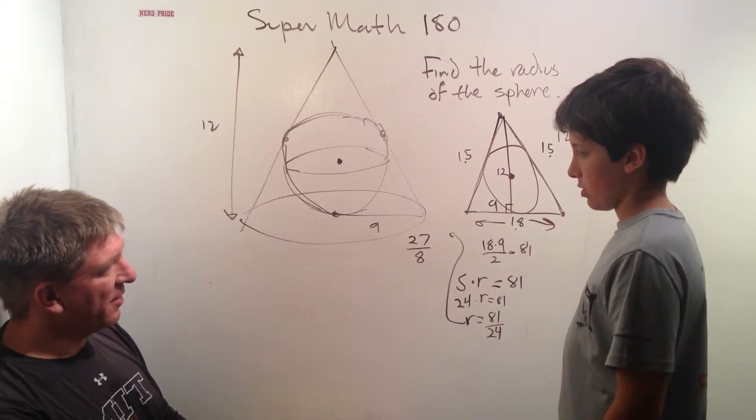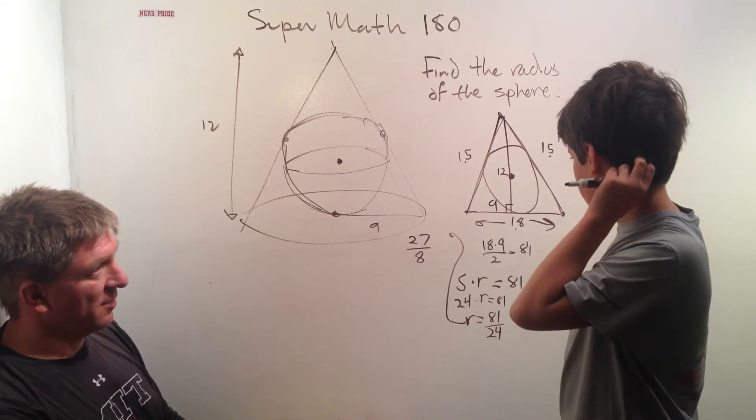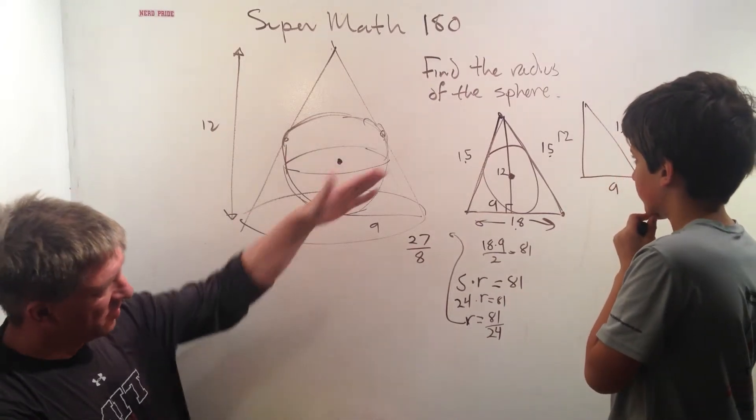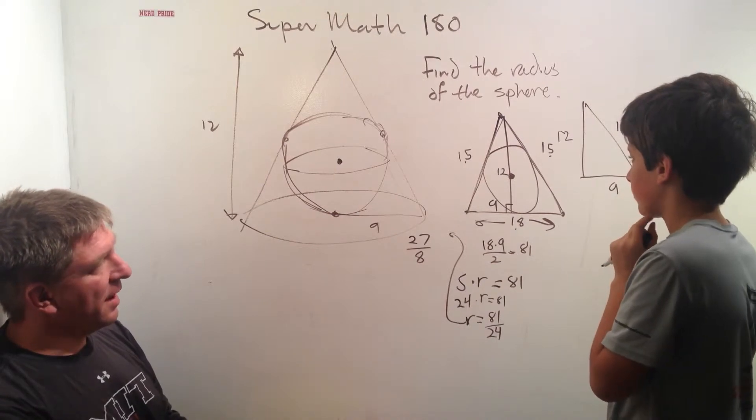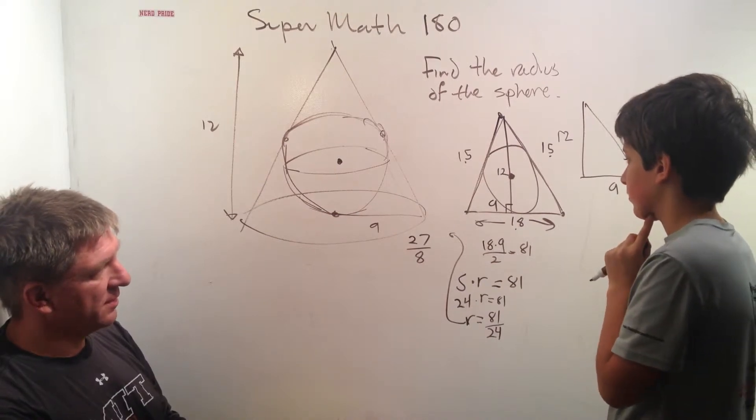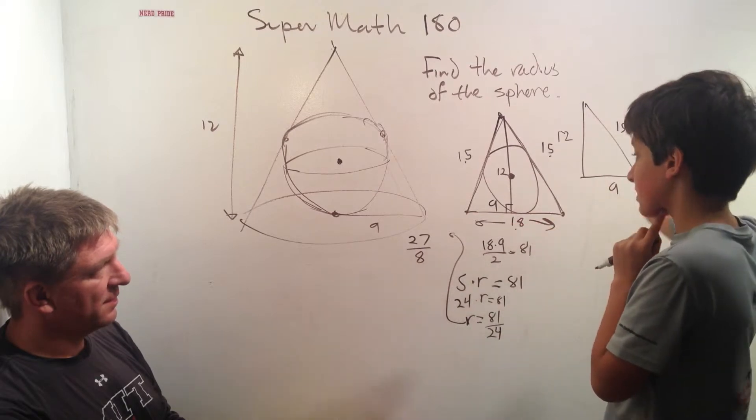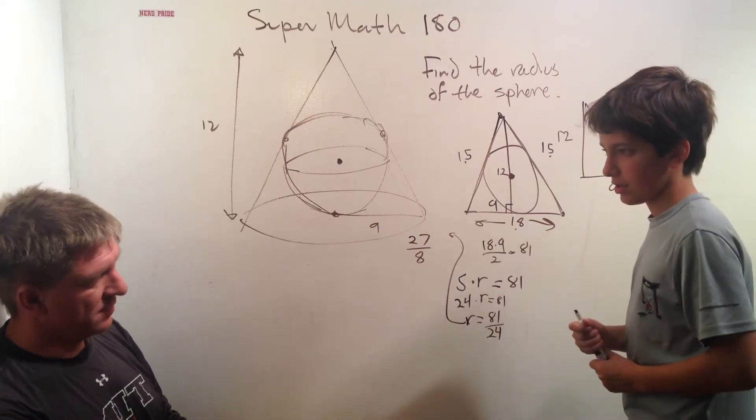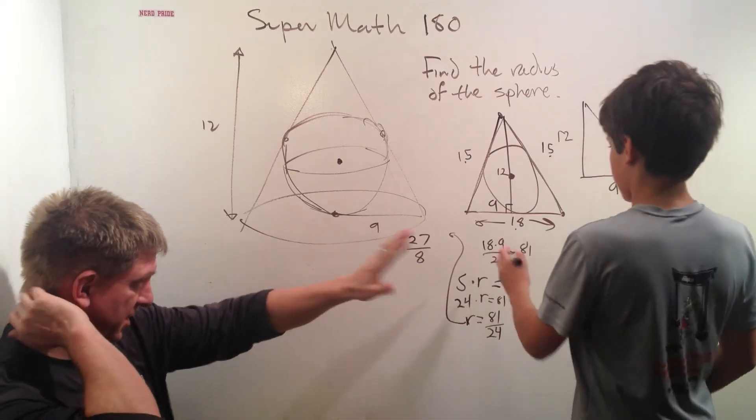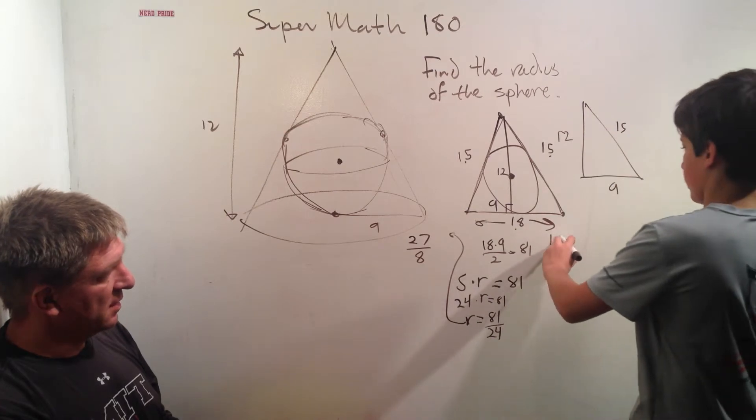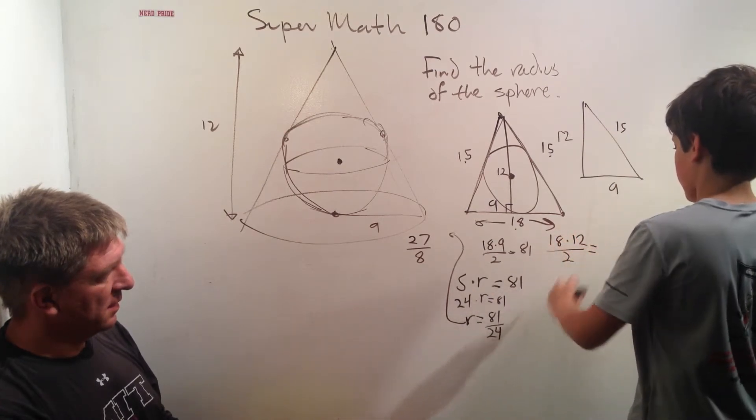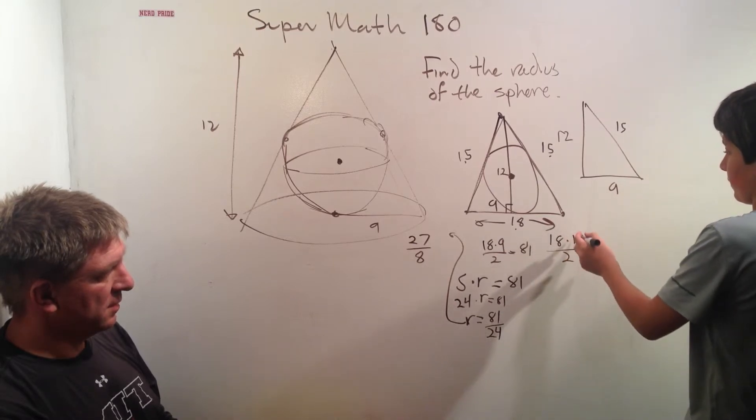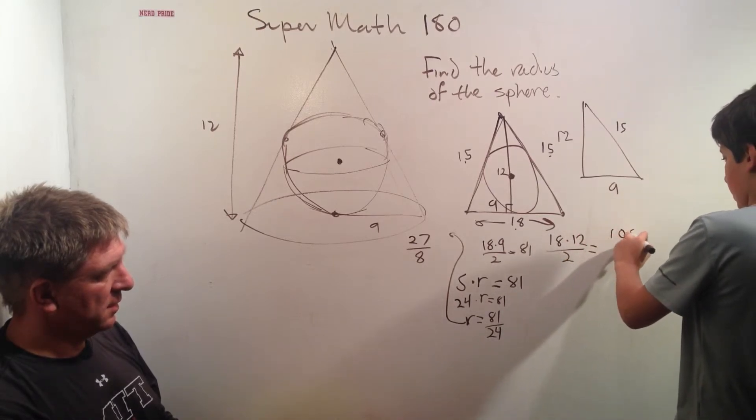Now, you made a very small mistake in this problem that compounded a little bit. So, go back to your triangle. What is the area of that triangle? So, it's... Oops, 18 times 12, not 18 times 9. So, just write it next to it. Like, take a step sideways. So, 18 times 12 over 2, which is 9 times 12, or 108. Okay.